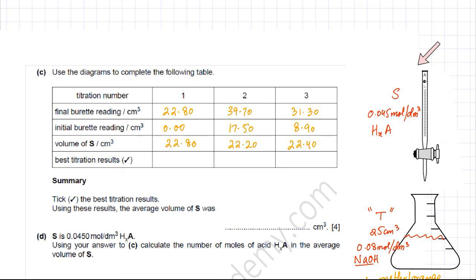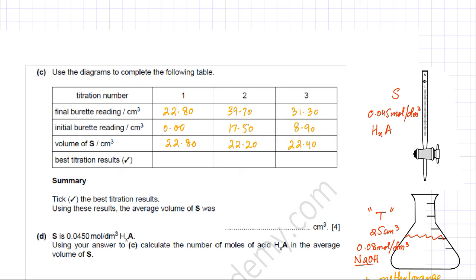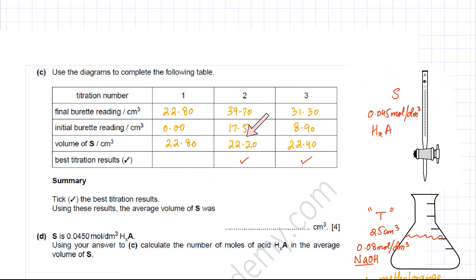The three titration volumes are 22.80, 22.20, and 22.40 cm³. The best results are those closest together — 22.20 and 22.40 are more consistent, while 22.80 is slightly anomalous and is discarded. The average of the two best results is (22.20 + 22.40) / 2 = 22.30 cm³. This is the average volume of S added.